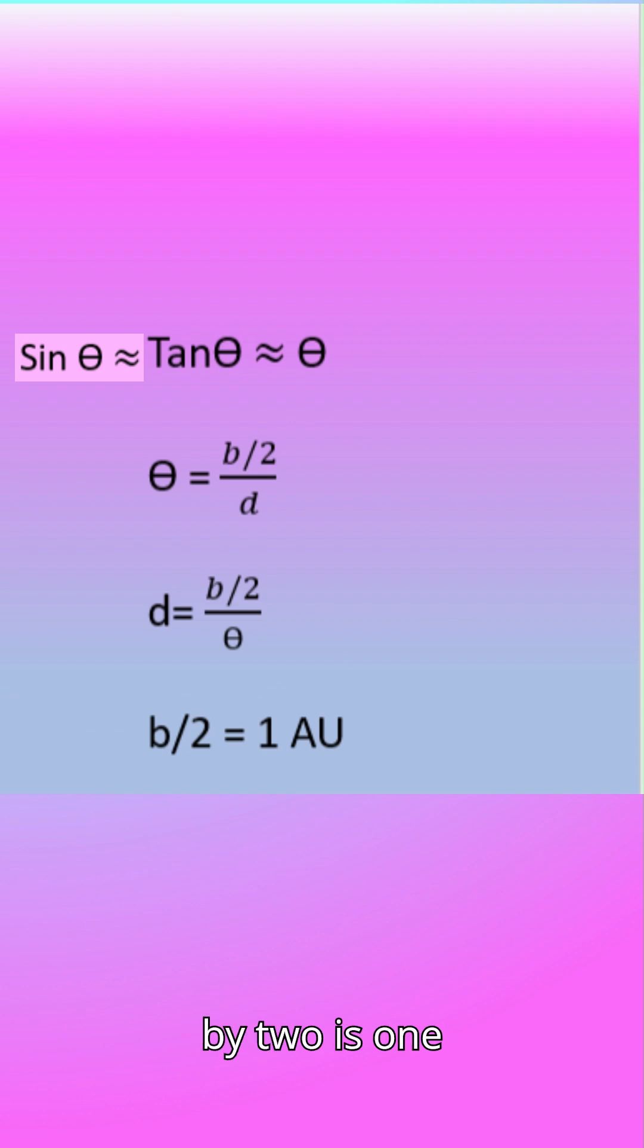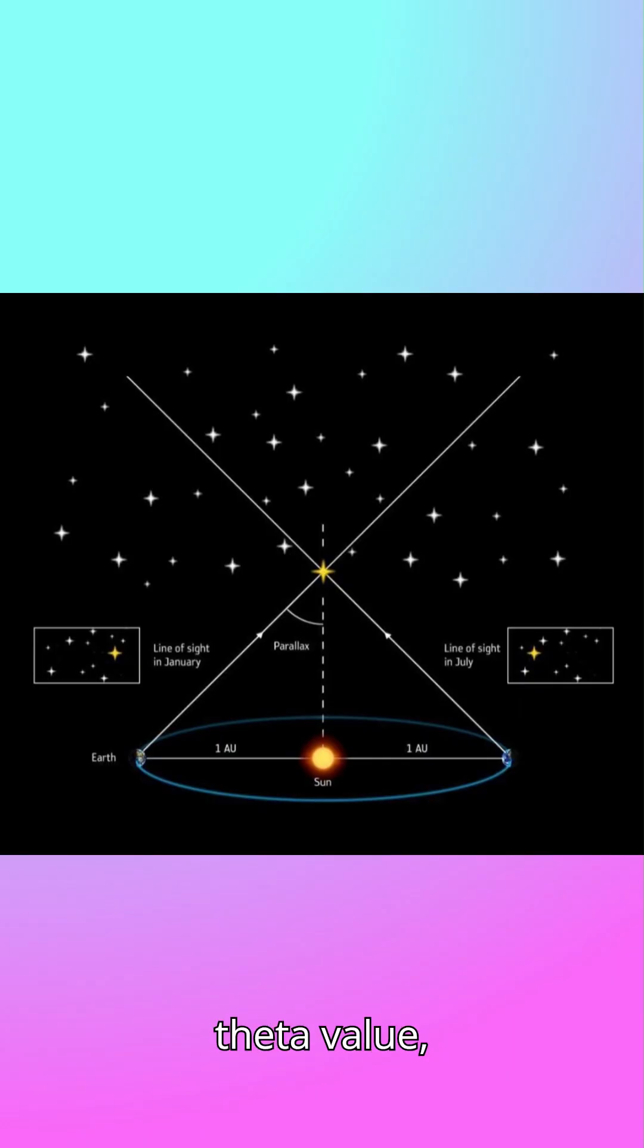Here, B by 2 is one astronomical unit. So D equals 1 by theta. Substituting theta value, they calculate distance of the star.